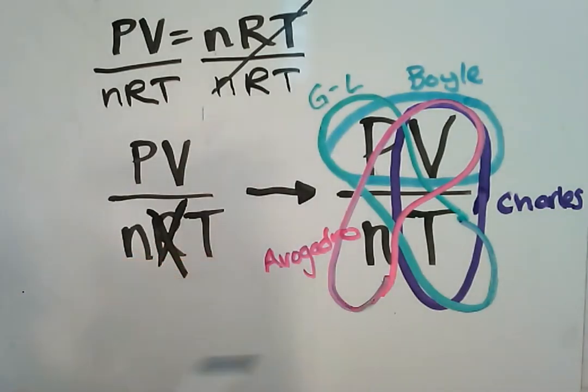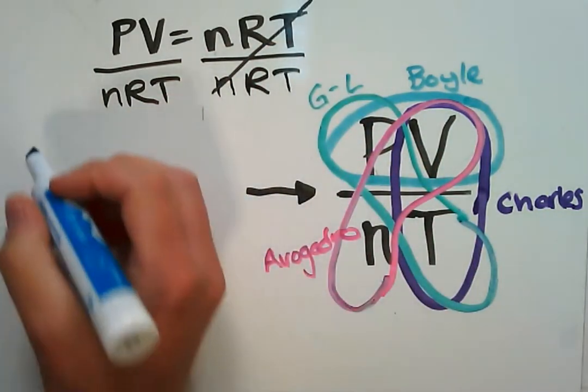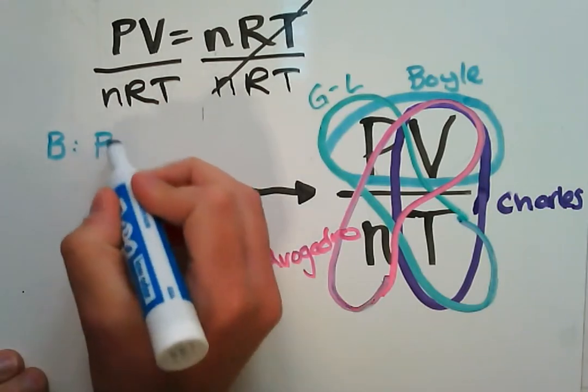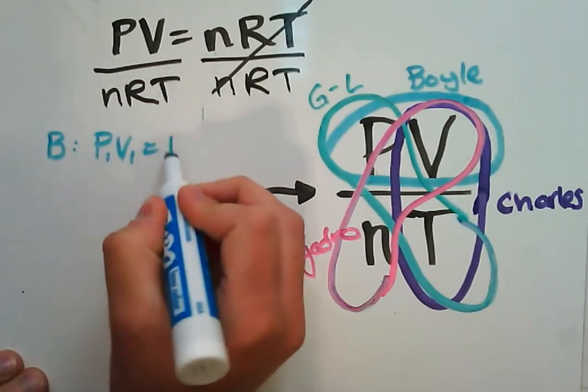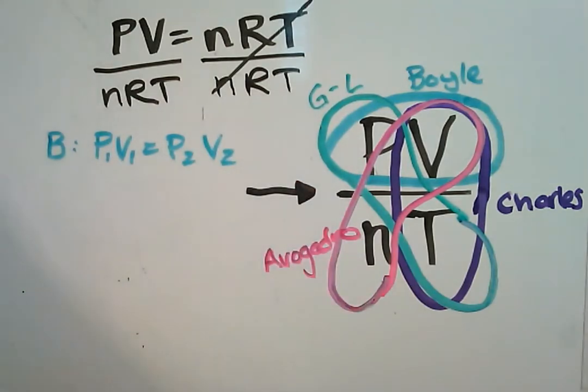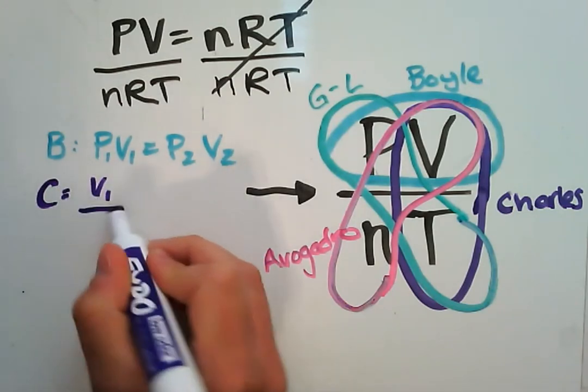So let's see, we can rewrite these out now. I'm actually going to erase this first part so we don't need that so much anymore. So Boyle's law: p1 times v1 equals p2 times v2.